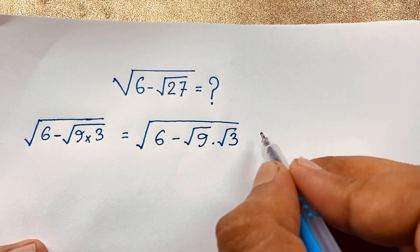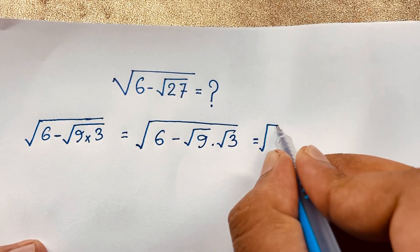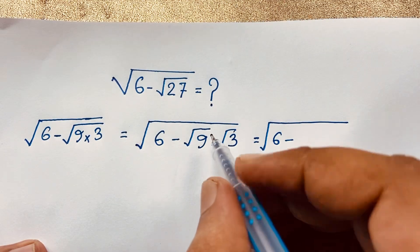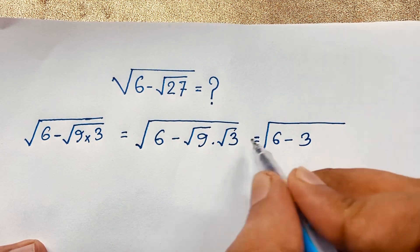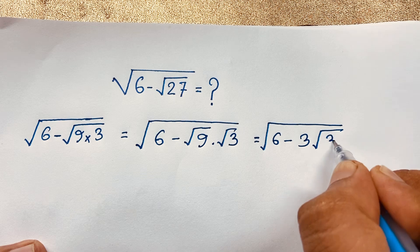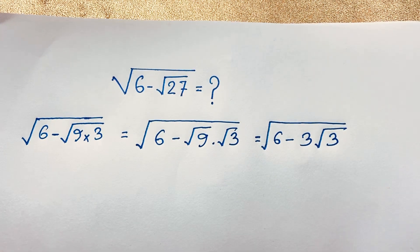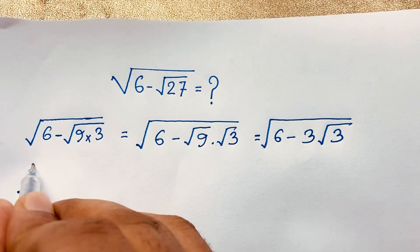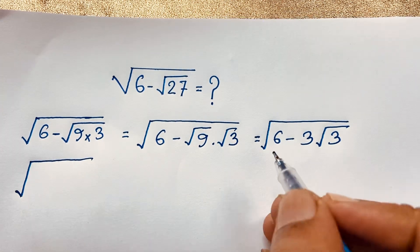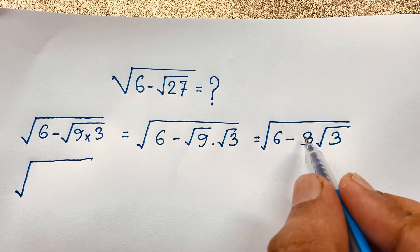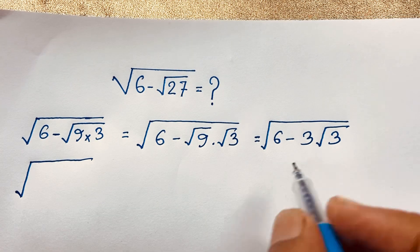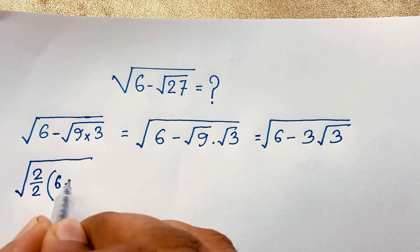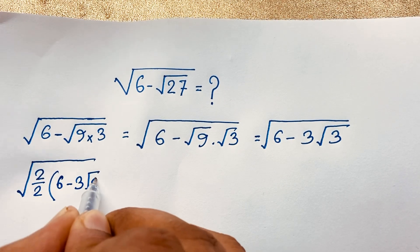Now you can see this expression: square root of 6 minus square root of 9, which equals 3, then times square root of 3. Now I multiply this value by 2 and again divide by 2, so I get 2 over 2, and the expression becomes 6 minus 3 square root of 3.